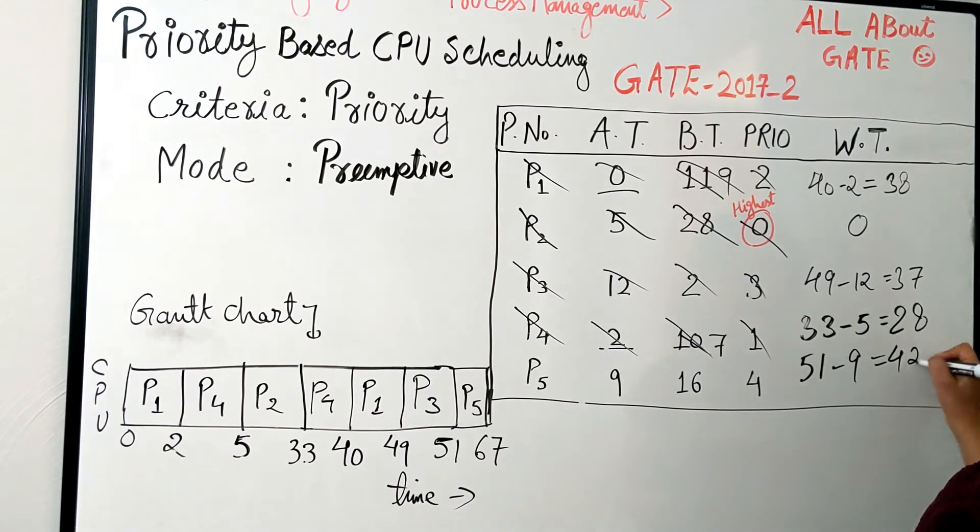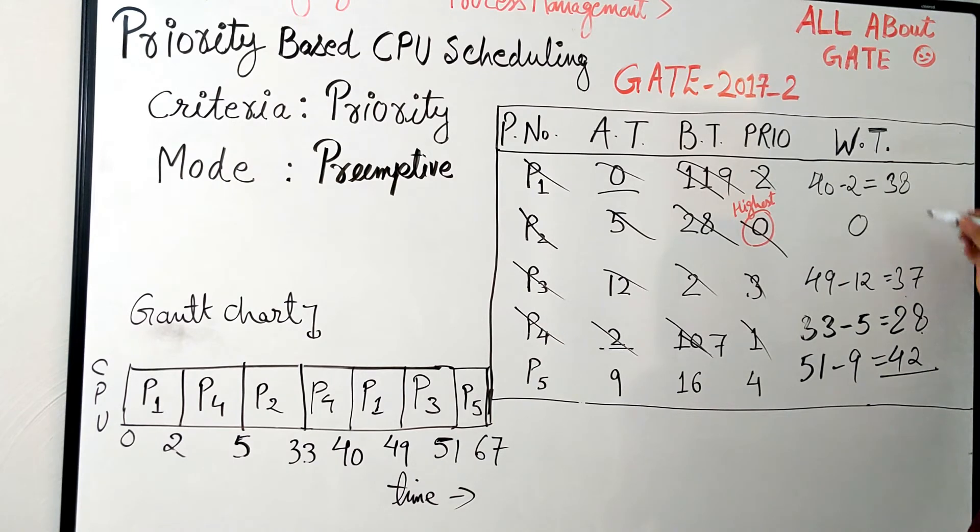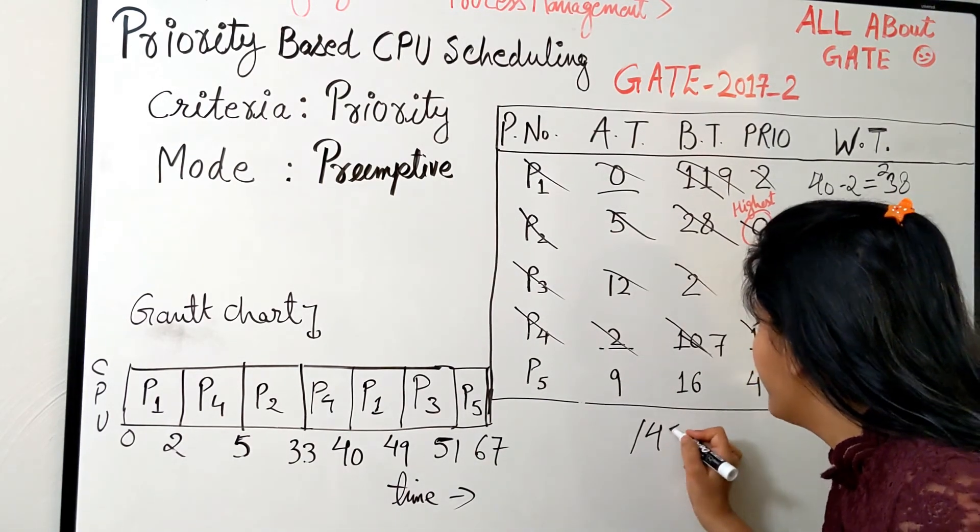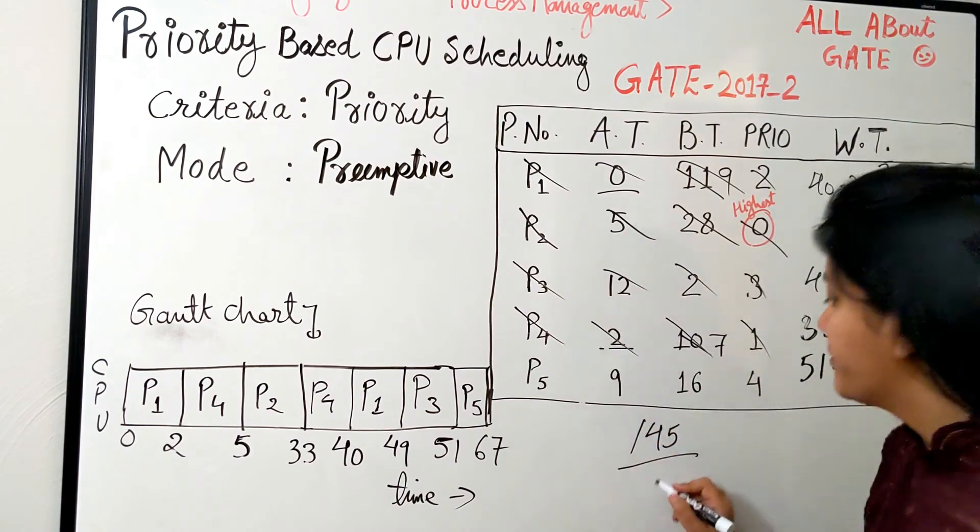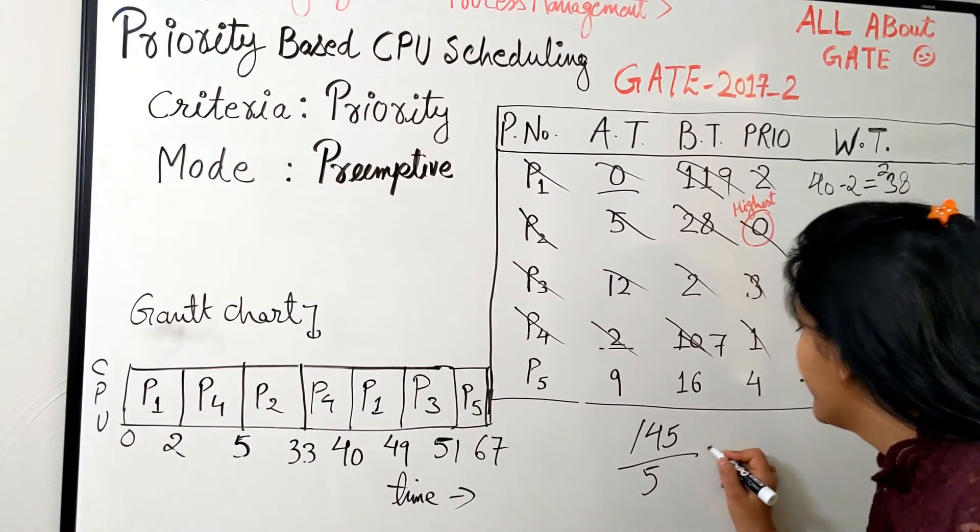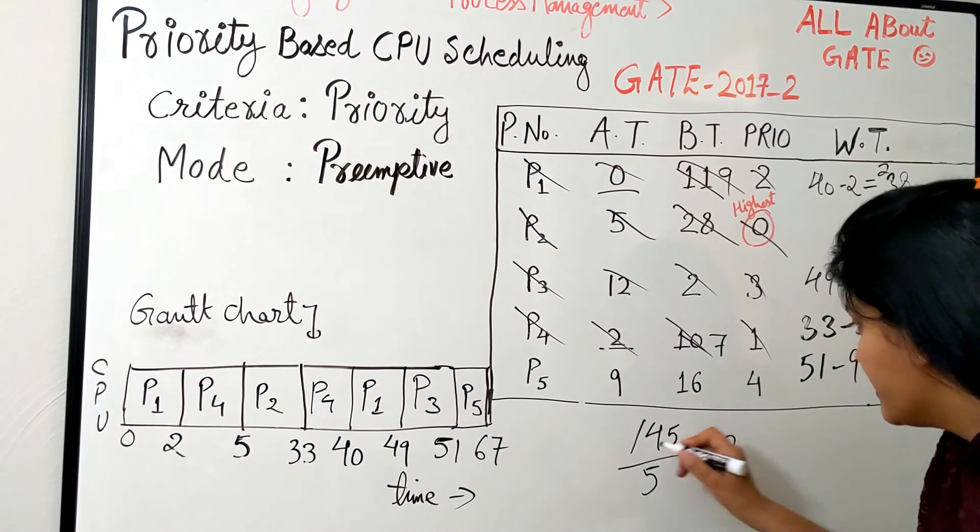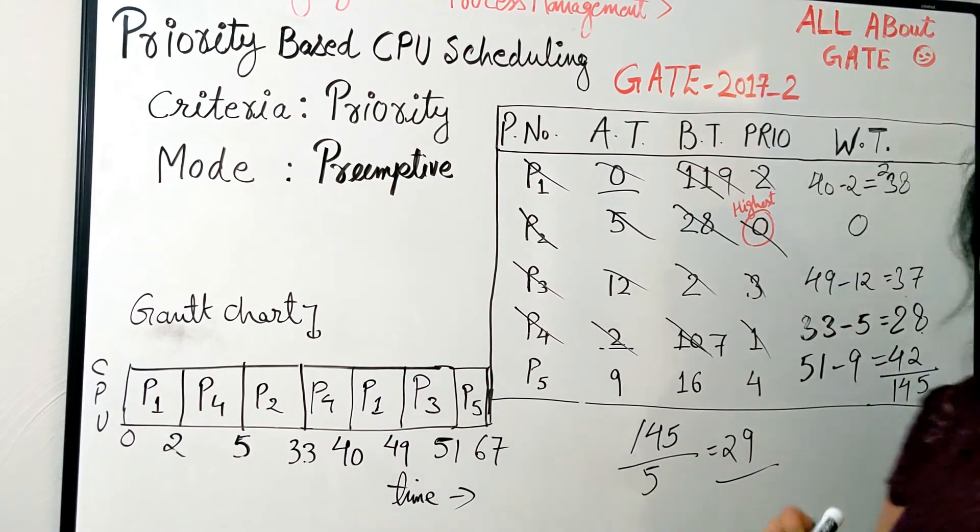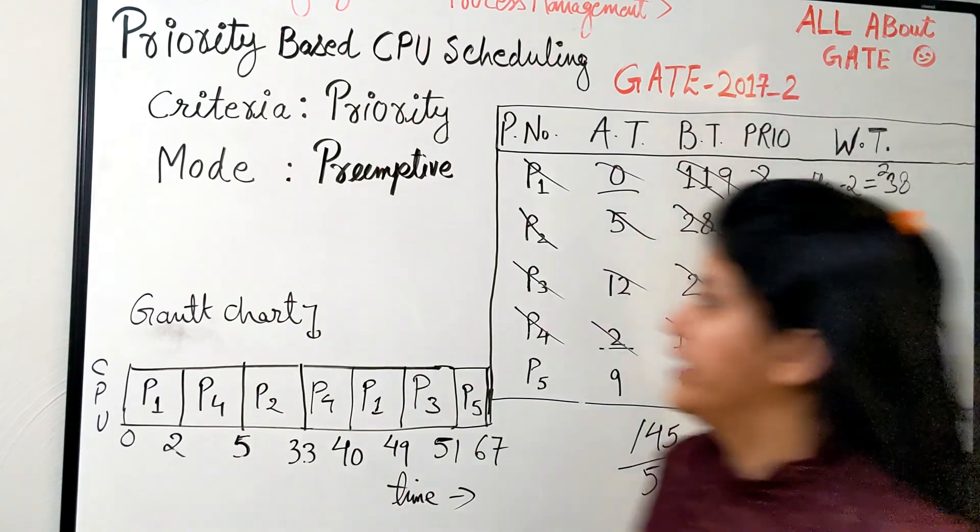So these become the respective waiting times. We just have to sum that up: 38 plus 0 is 38, plus 37 is 75, plus 28 is 103, plus 42 is 145. Once we have 145 as the total waiting time, divide by the number of processes, which is 5. So we get 145 divided by 5, which is 29. The average waiting time for the scheduling is 29.